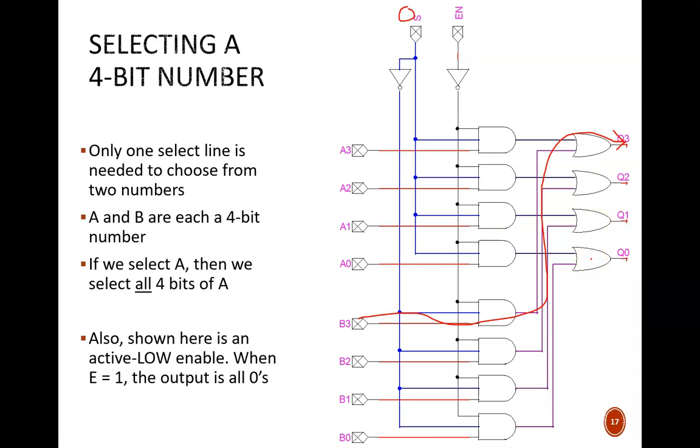Of course, all of this depends on the circuit being enabled, which is controlled by the EN input. In this case, we have an active low enable due to this NOT gate. If EN equals 1, the MUX is inactive and all of the outputs are forced to be 0.